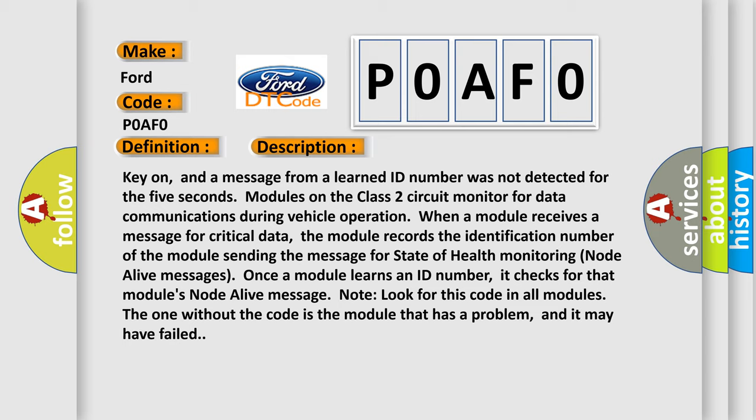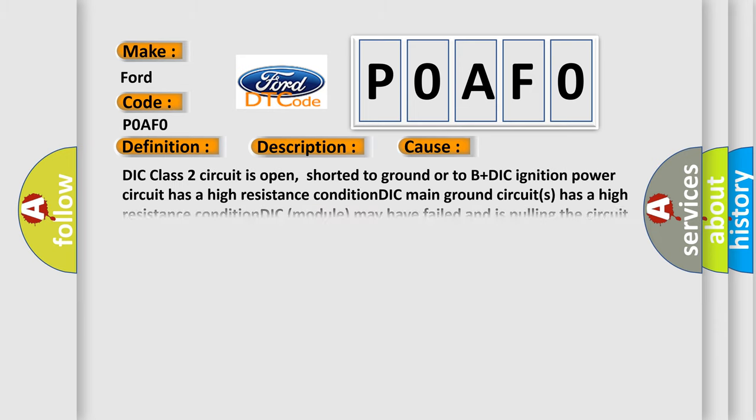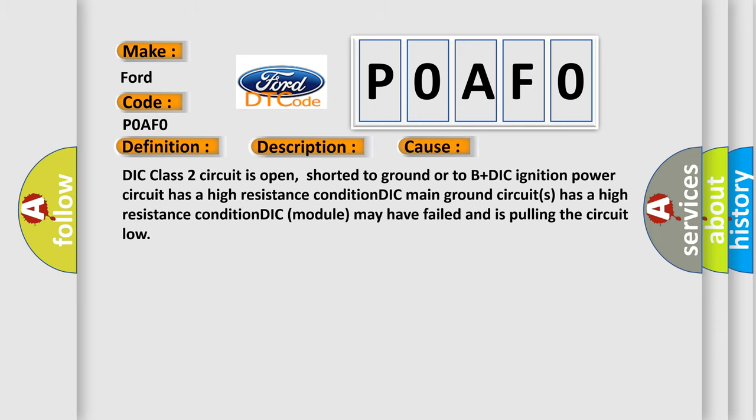This diagnostic error occurs most often in these cases: DIC Class 2 circuit is open, shorted to ground, or to B+; DIC ignition power circuit has a high resistance condition; DIC main ground circuit has a high resistance condition; or the DIC module may have failed and is pulling the circuit low.